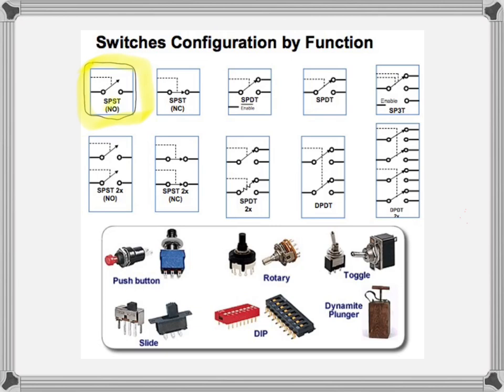A little more specifically, when buying switches — particularly push-button switches — there's the NO and the NC: normally open and normally closed. For a push-button switch that doesn't stay latched, when you're not touching the switch it's either normally open or normally closed. When you press it, you change the state. Some push buttons change state and stay; others require you to hold them.